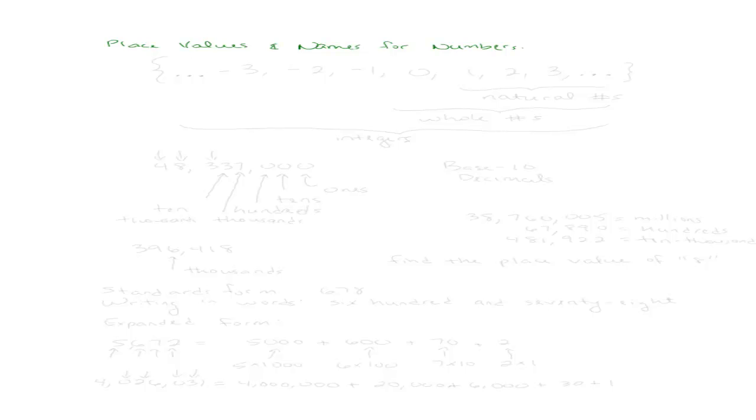Before we get into specific names for numbers and place values, let me just write out a set of numbers. So here what we have is we have some negative numbers, some positive numbers, and zero.